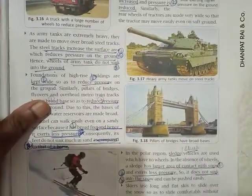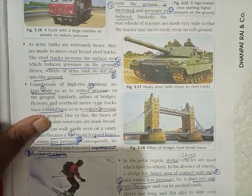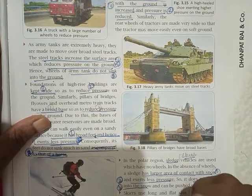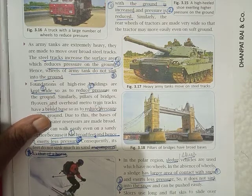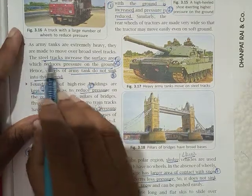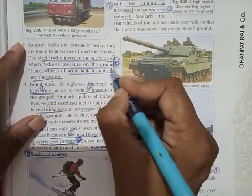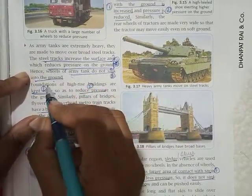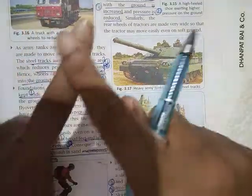Now today for practice, I will be sending another two questions and I expect you to write the same way as I told you. I hope you all are understanding children. Otherwise, I won't give you even a single mark. The steel tracks means it increases the area which reduces pressure. This you can consider as a single point. Therefore, wheels of army tank do not sink into the ground. I hope you got the idea.